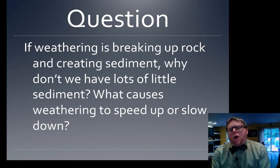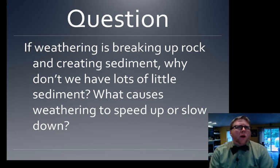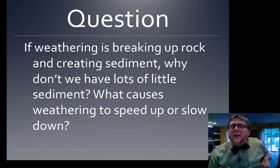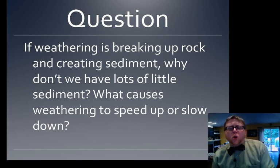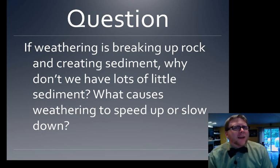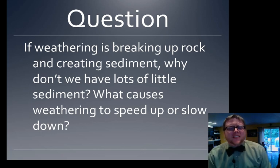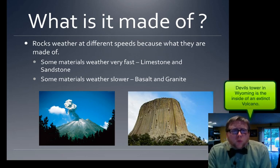If water, ice, and acids are wearing down rock all over our planet, why isn't Earth just covered in little bits of sediment? Weathering happens much faster than plate tectonics — we don't see volcanoes erupting here, but we still have tall mountains like Mount Hood. So what causes weathering to slow down, speed up, or even stop? The first reason is what the rock is made of — some rocks weather really, really fast.